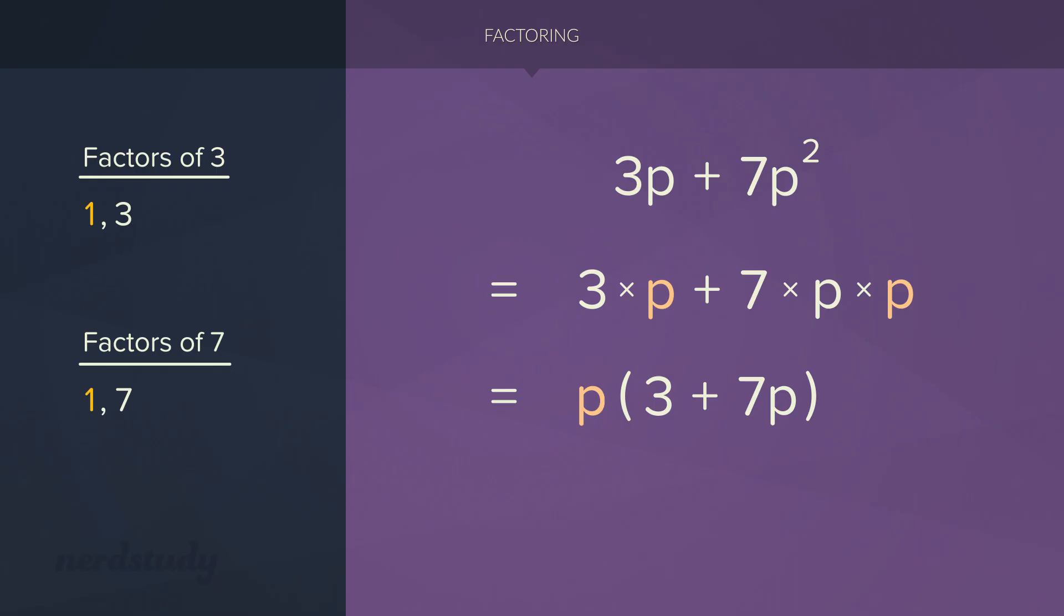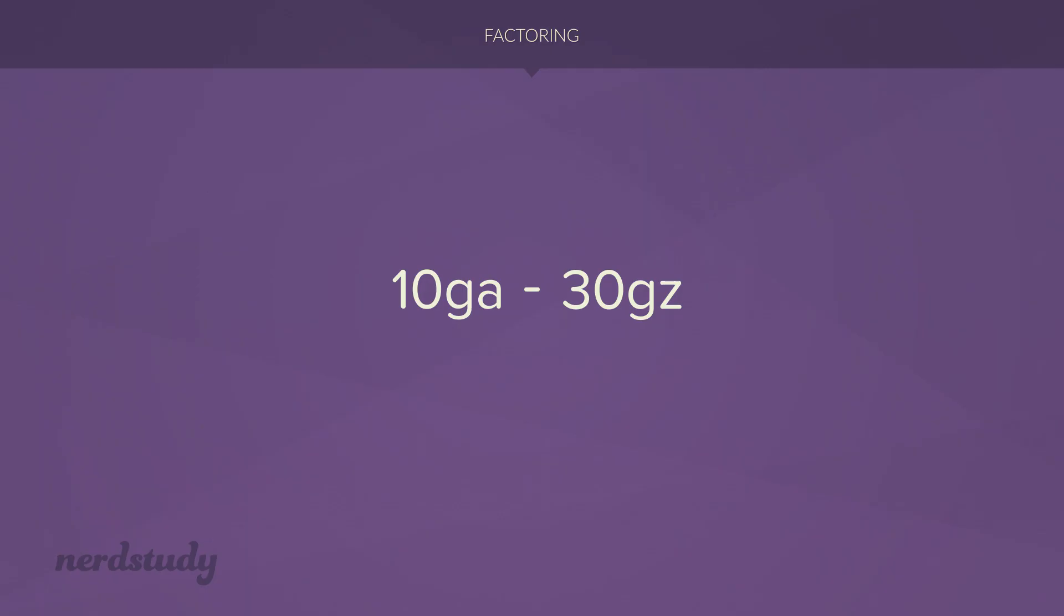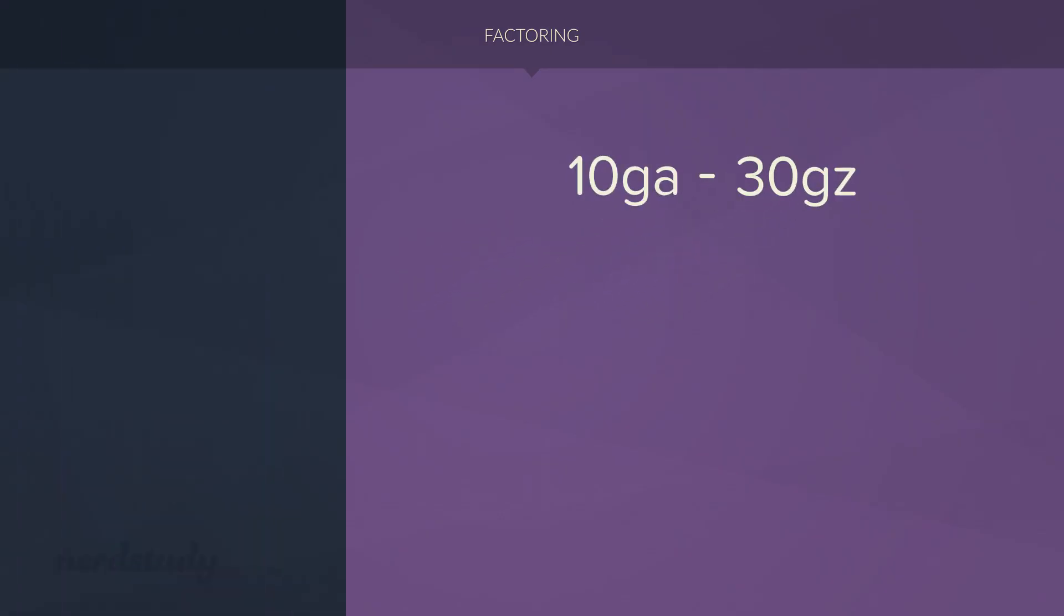So let's try factoring out one more expression. Here we have 10ga minus 30gz. So let's try to be a little organized here and write out the factors of 10 and the factors of 30 off on the side as scratch work. Now for the factors of 10, we have 1 and 10 and 2 and 5. Let's just write them in order so that it'll be easy to organize it. And for the factors of 30, we have 1 and 30, 2 and 15, 3 and 10, and 5 and 6. And again, let's just write them out in order so that it is organized.